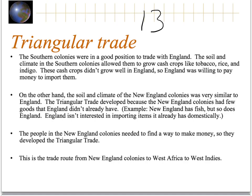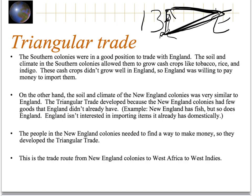In the previous slide I talked about some trade routes. There are the 13 colonies and there's England, but remember there were different regions — New England, Middle, and Southern colonies. Sometimes the New England colonies would send something to England. England might then ship something back to the Southern colonies, and the Southern colonies might send that back up to the New England colonies. So we've got this triangle of trade. The soil and climate in the Southern colonies allowed them to grow cash crops like tobacco, rice, and indigo — these didn't grow well in England, so England was willing to pay to import them. But the soil and climate of New England was very similar to England, so the triangular trade developed because the New England colonies had few goods that England didn't already have.